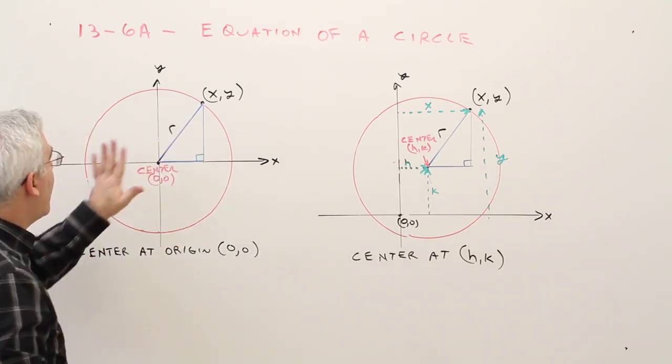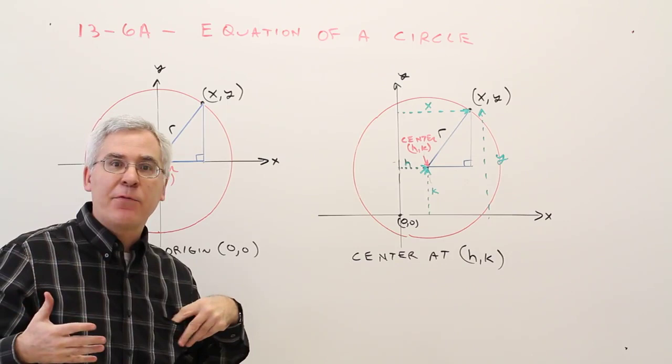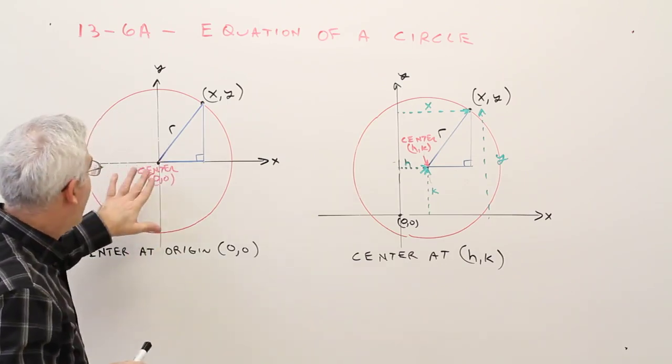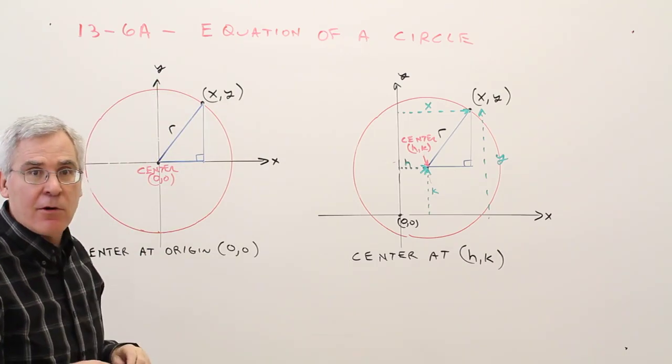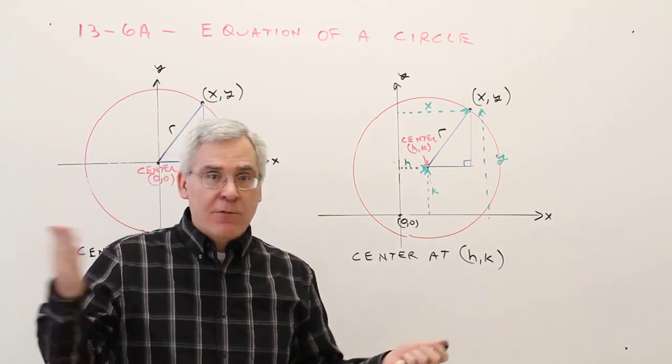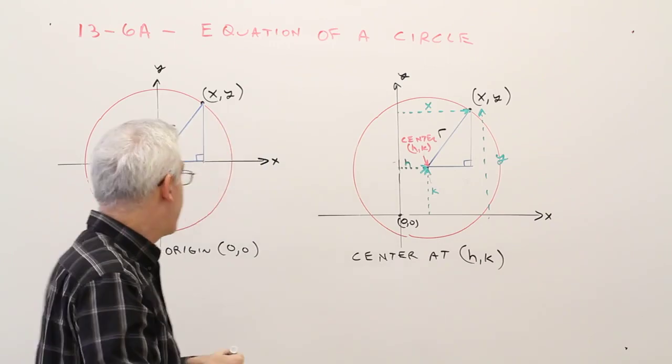Alright, so first to derive the equation of a circle, I've got the center at the origin, I've got the radius specified here, and the Pythagorean theorem is really what derives these equations.